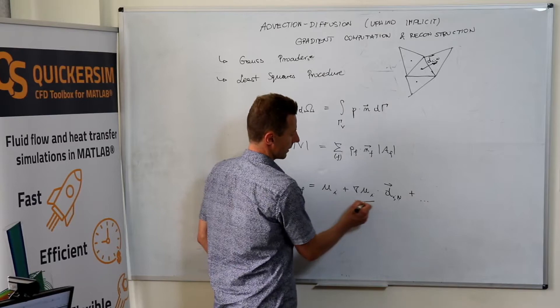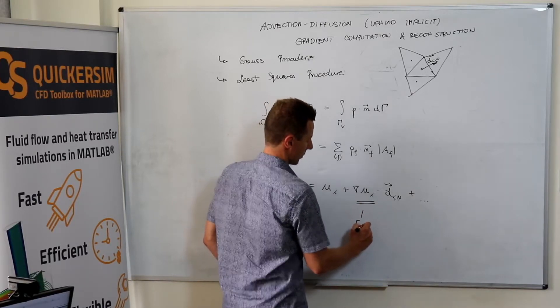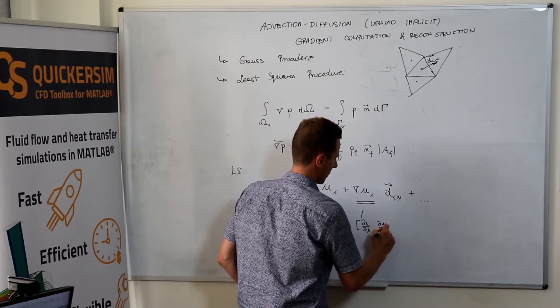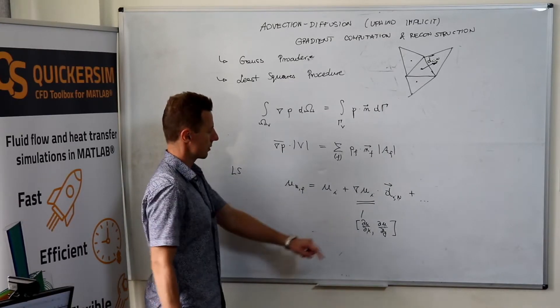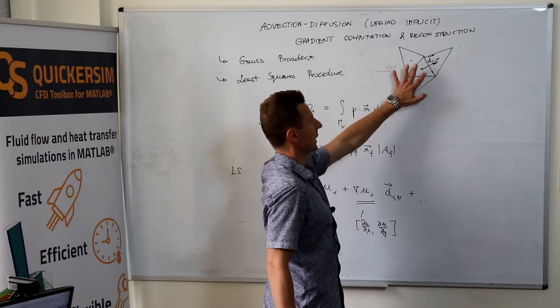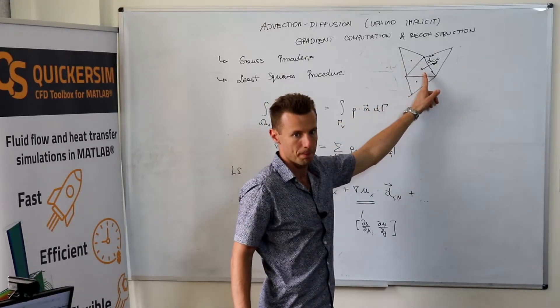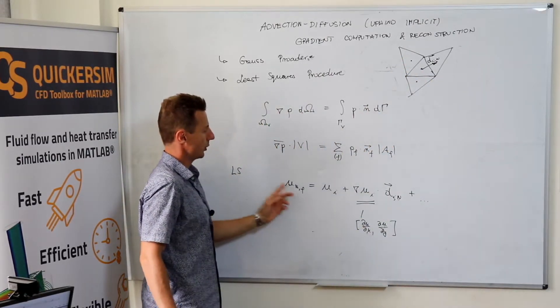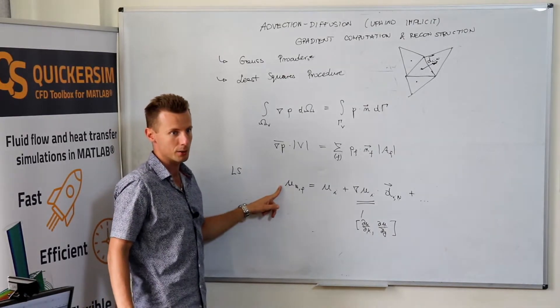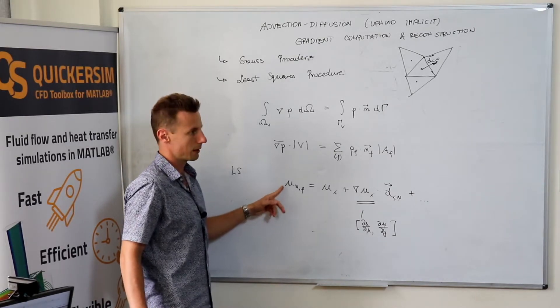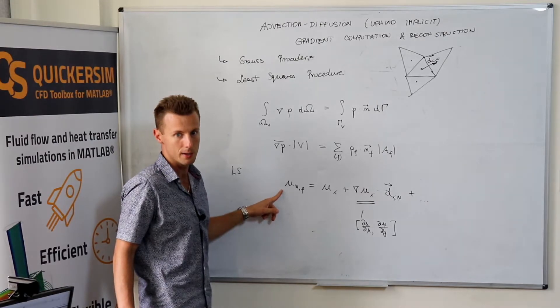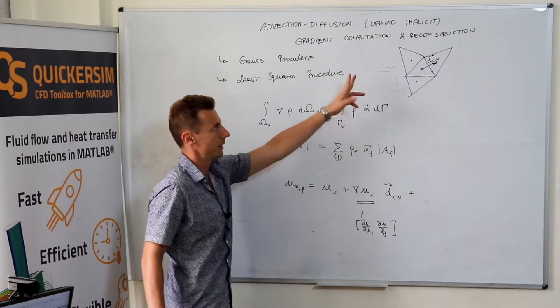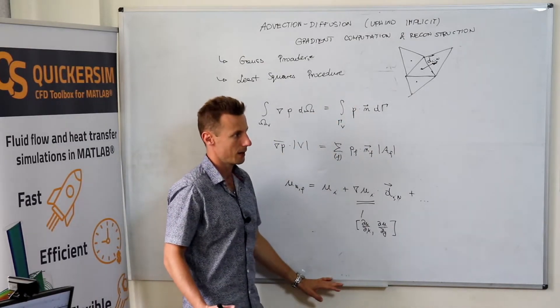In two dimensions, we've got the gradient with two components, du dx, du dy, you've got this tensor vector with two components. But in 2D, you have at least three neighbors. At least three neighbors. You've got four neighbors for the quad cells. So you can write three equations like that, and you can't fulfill all the equations. So what you're doing is you're writing these three equations and solving them in the least square sense. And by doing so, you end up having two components of the gradient that approximate the variation of the spatial field as good as they can.